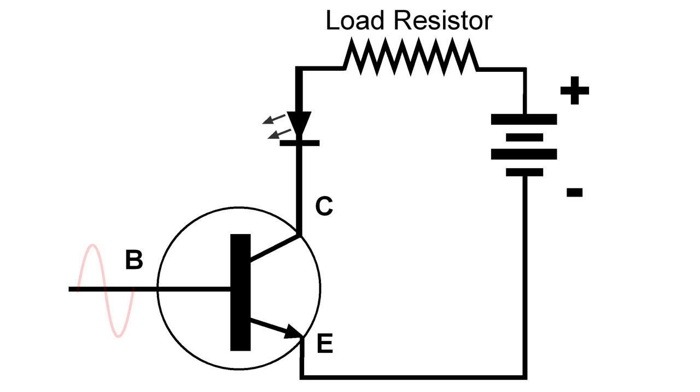And if we add a signal to this, if the signal is in the middle, again this is class A biasing, we get about half the light out of the diode.